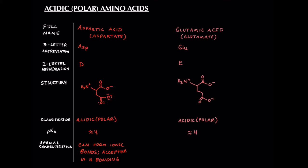Now for special characteristics, it's going to be very similar to aspartic acid because they have the same functional group. So the same exact thing, can form ionic bonds because they're negatively charged. So they're going to be able to complex with positively charged things, particularly positively charged or basic amino acids. And they can also participate in hydrogen bonding as an acceptor. So acceptor in H bonding.